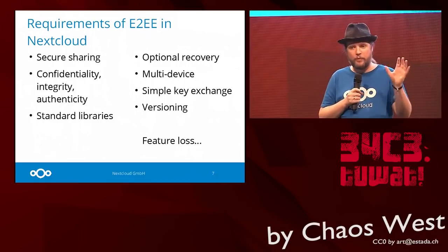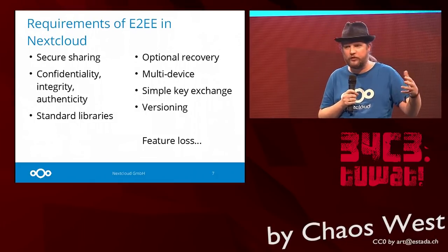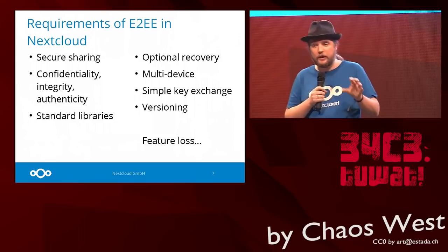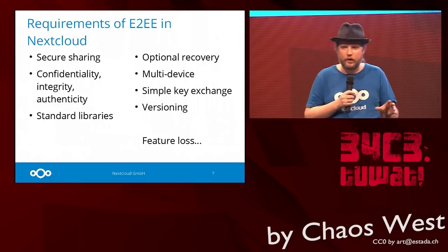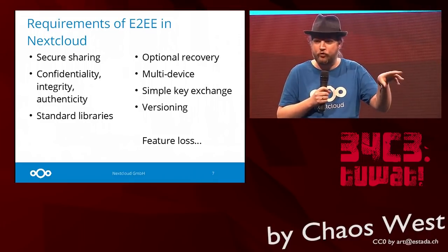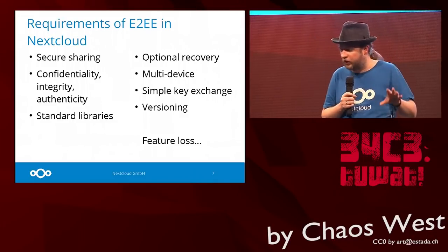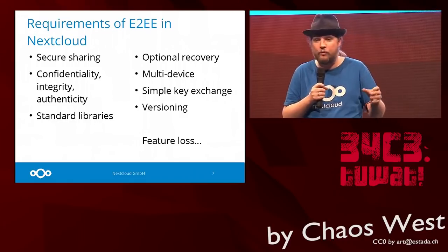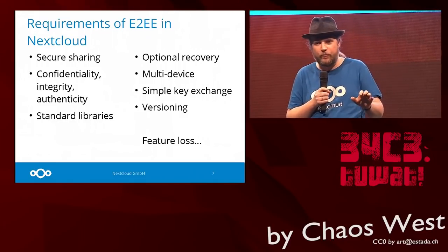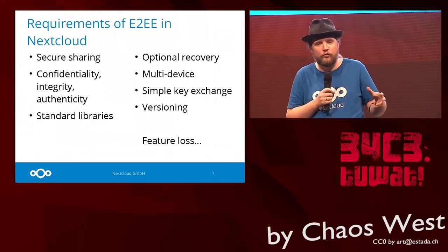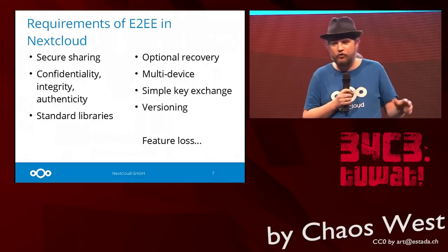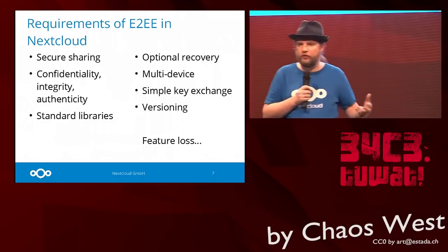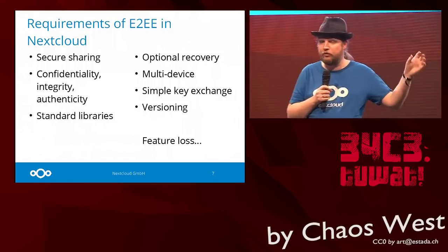Aside from these two basic things — protect from the server and be easy to use — the other properties we wanted were: sharing should be easy but completely secure; it needed to provide confidentiality, integrity, and authenticity. Authenticity means that if somebody shares a file with you, you know it's from that person — somebody else can't impersonate them. Integrity means the server, which has access to all the files even though they're encrypted, should not be able to fiddle with them. A server could delete some files, in which case the user should be warned, but a server should never be able to modify any data you get. And confidentiality — the server should never be able to read the data, nor anyone else between recipient and sender.